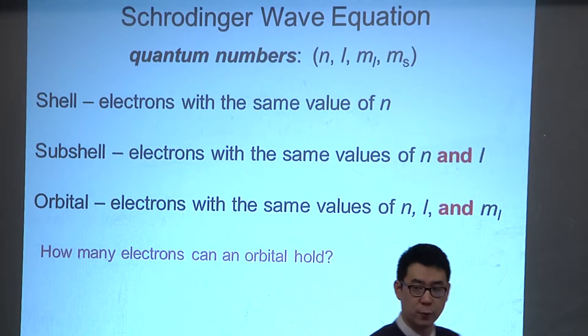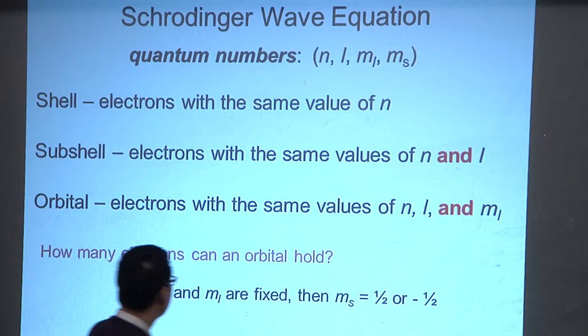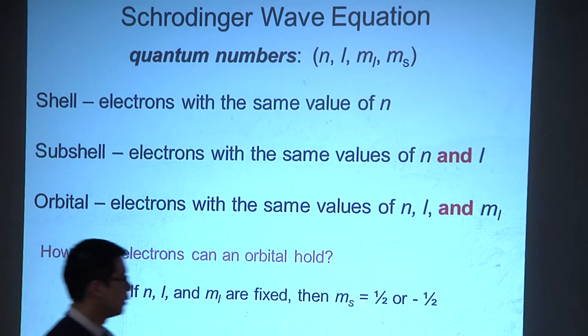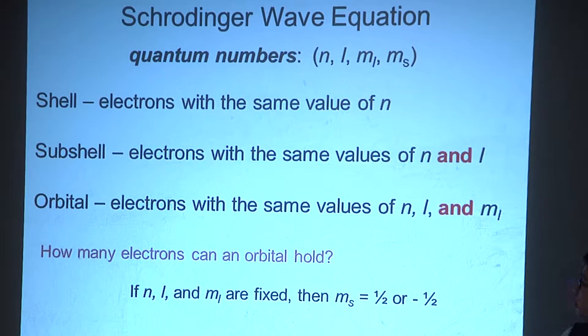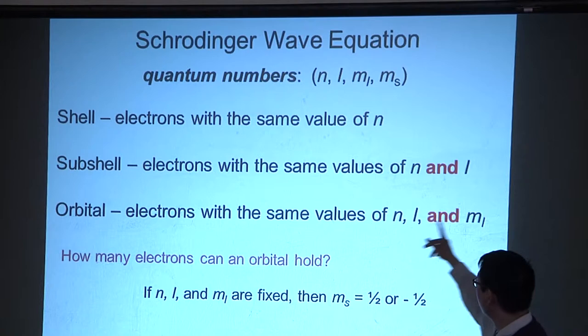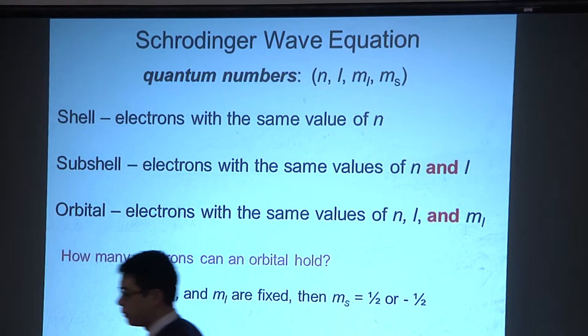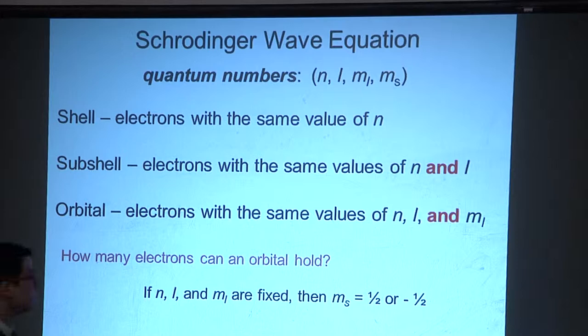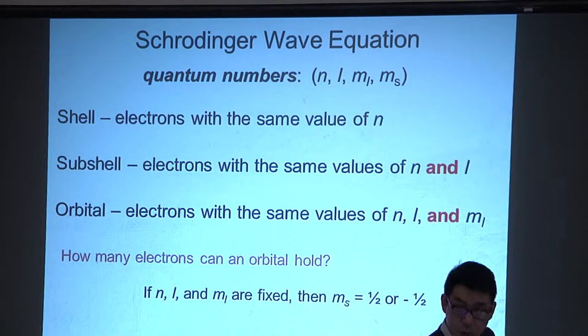In the atom, two electrons can sit in one seat — a plus one-half and a minus one-half. So if n, l, and m sub l are fixed, m sub s can be plus one-half or minus one-half. Each orbital can contain up to two electrons. We limit to two electrons because once n, l, and m sub l are fixed, for the Pauli exclusion principle to hold, m sub s has to be different.